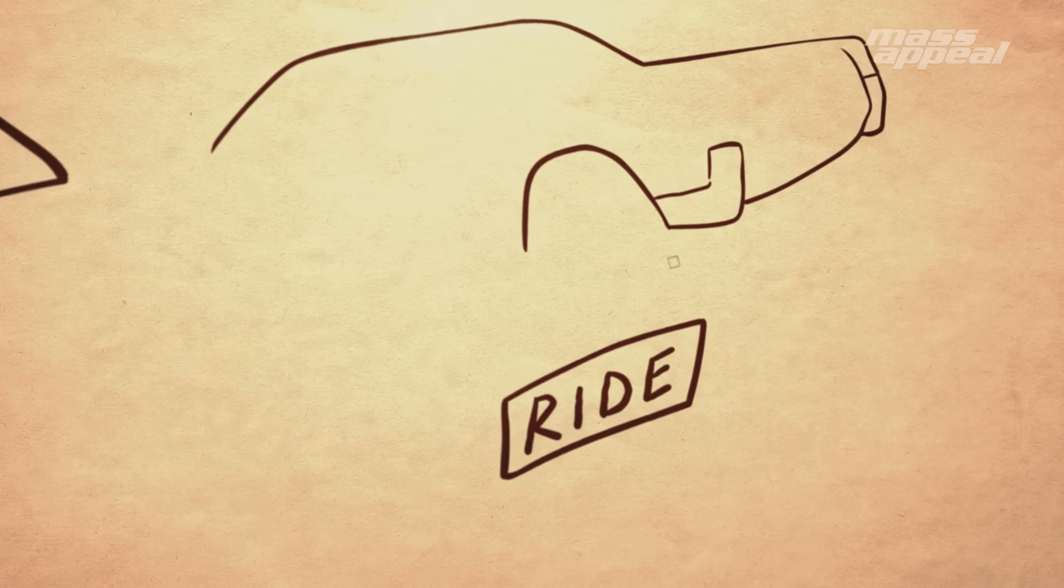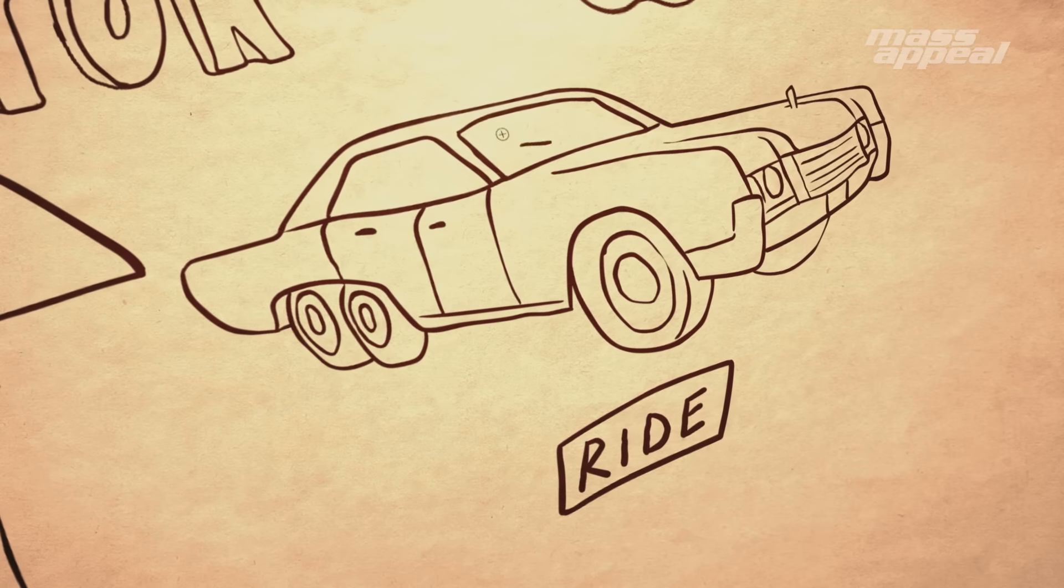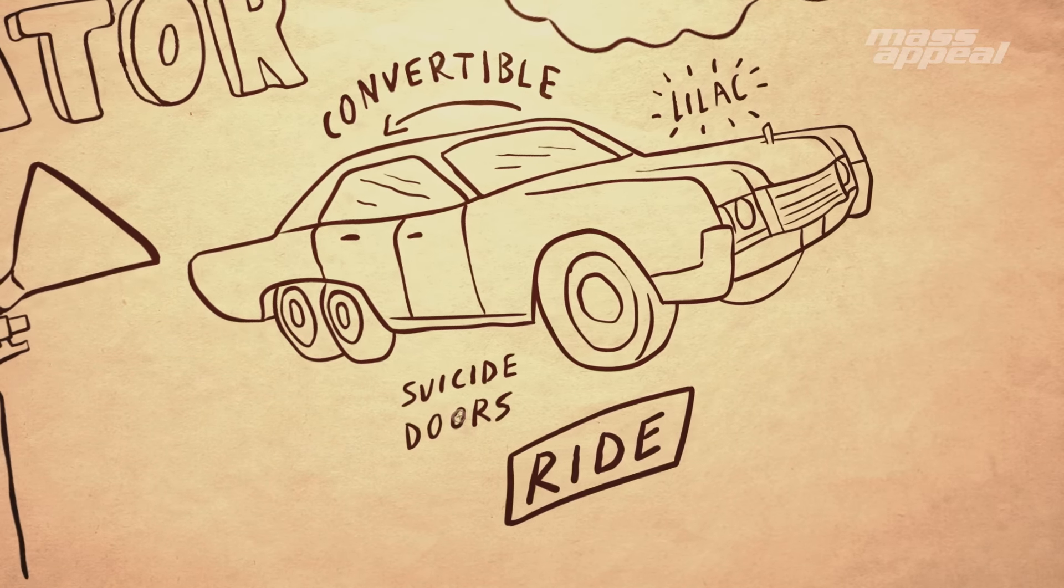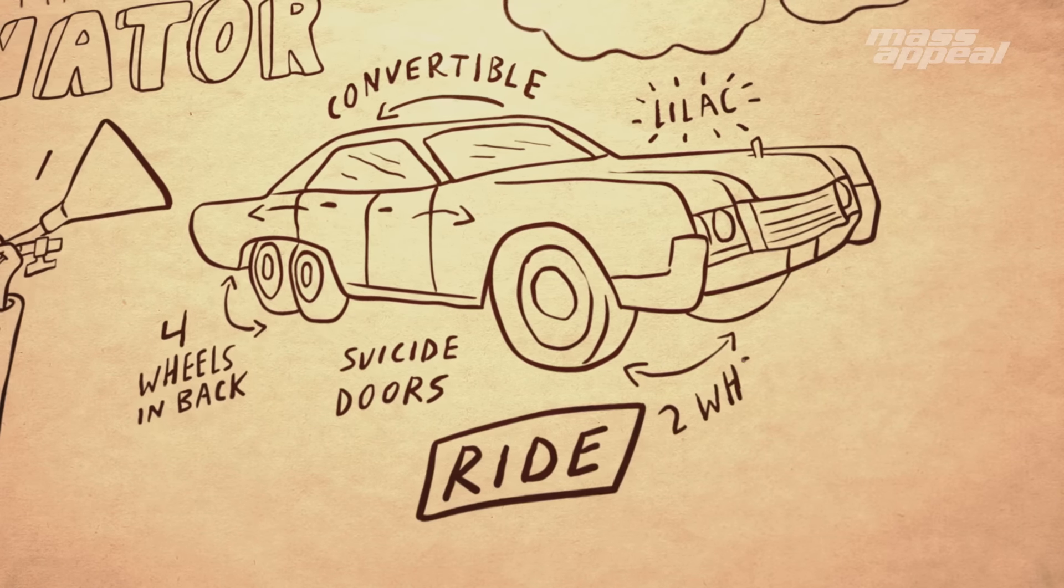He likes, whenever he pulls up he's probably got, I imagine him in like a nice 66 Lincoln Continental. Lilac. It's a drop top convertible. Suicide doors. And it's actually like the new G-wagons where it's got six wheels on it.